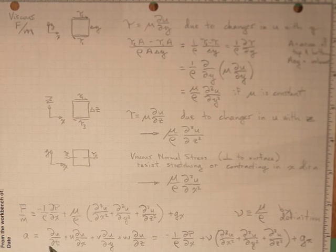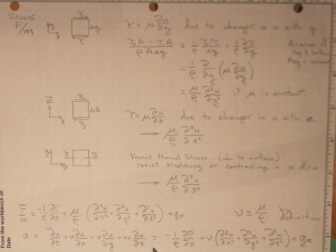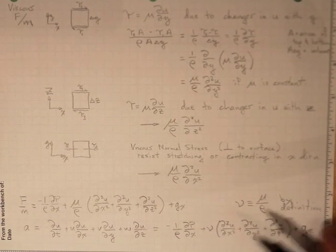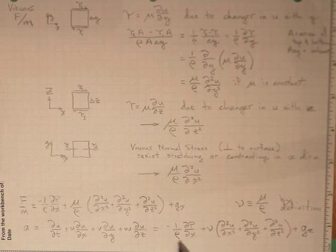So this was the acceleration that we saw, or the change in the total momentum in our control volume. And it must be equal to the force per unit mass. And there's our Navier-Stokes equation.